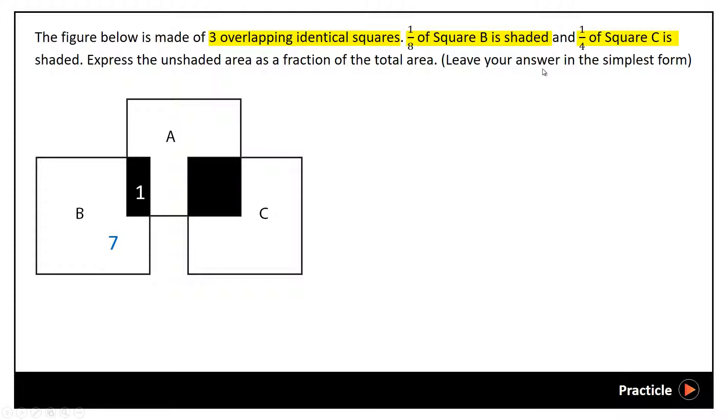And then we also know that 1 quarter of square C is shaded. So same thing, 1 part out of a total of 4 parts. Meaning that the number of parts that are unshaded in square C would be 4 minus 1, which is 3.